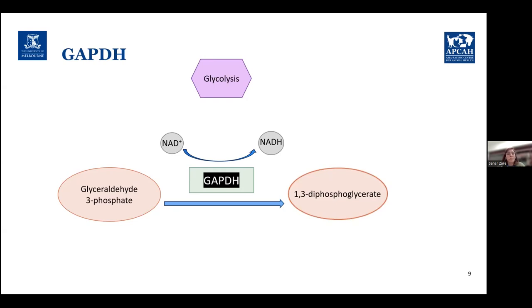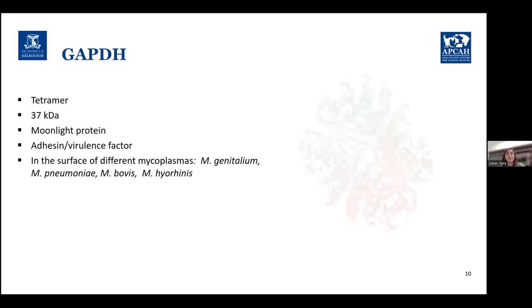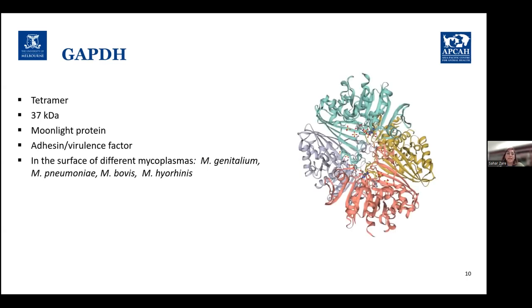During glycolysis, GAPDH converts glyceraldehyde-3-phosphate into 1,3-diphosphoglycerate by reduction of one molecule of NAD+ to NADH. This is the main function of GAPDH that everyone mostly knows. But something that fewer people know is that GAPDH works as a tetramer — that is the structure of GAPDH within the cell. In Mycoplasma synoviae it is around 37 kilodaltons, and it is a moonlighting protein, meaning it has functions besides its enzymatic activity.